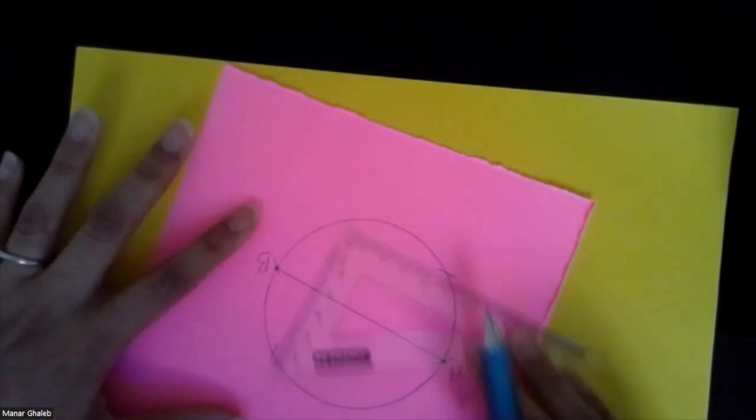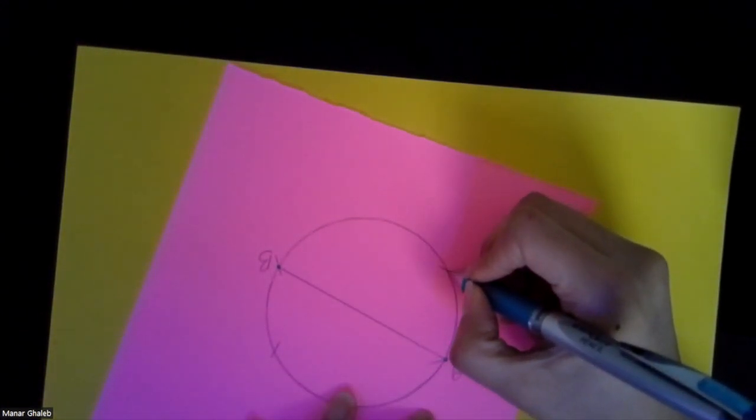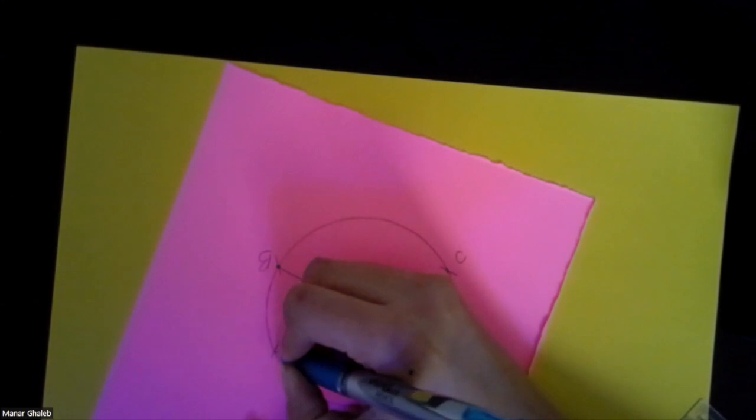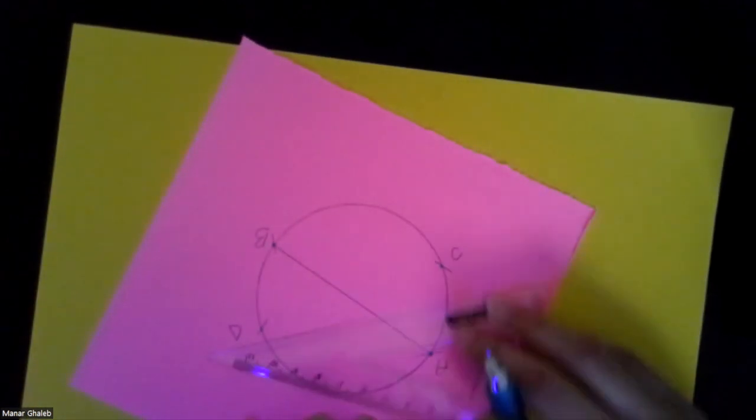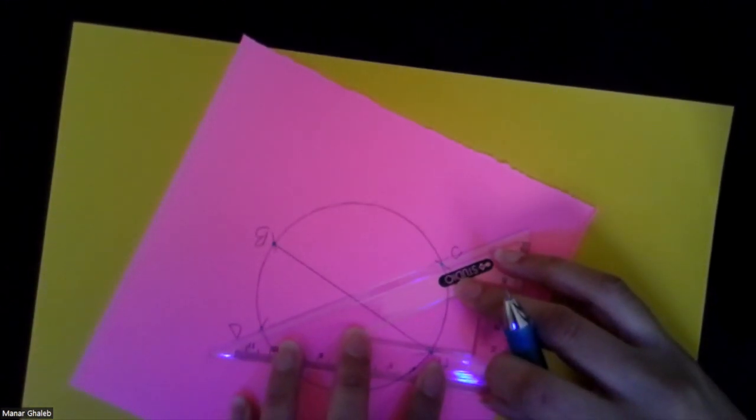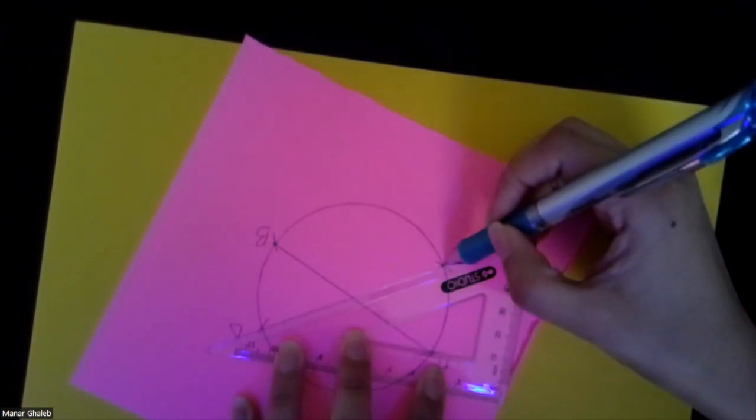And then I'm going to lift my set square, and I'm going to label these two points. Let's call this C and call this D. And then I'm going to do the same thing I did earlier. I'm going to connect C and D with a line, like so.